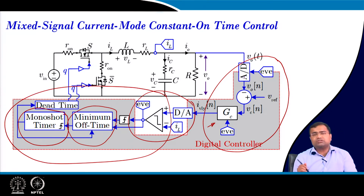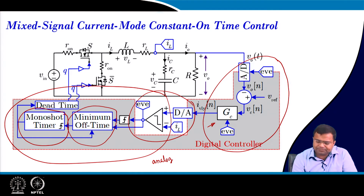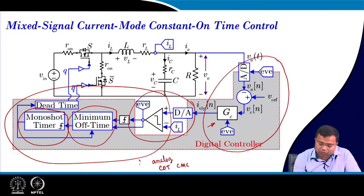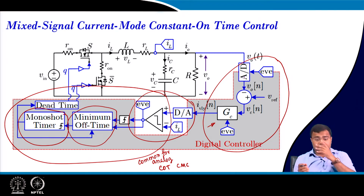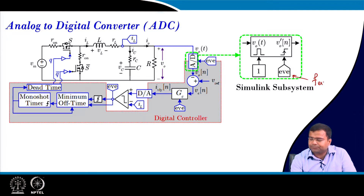Up to the comparator point, it is the same as the constant on-time current mode control discussed in our previous NPTEL course and in the architecture exploration. The analog constant on-time current mode control block is common. The new additions are the digital block — the A-to-D converter and the DAC — and these also require sampling. We must use an event-triggered ADC because sampling must be done non-uniformly using an event clock.